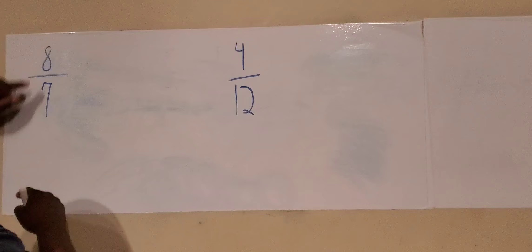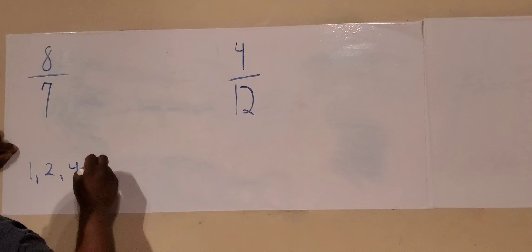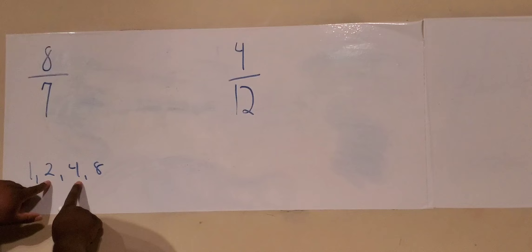Eight sevenths, factors that are divisible. Step one, what goes into eight? We have one, two, four, and eight. Eight times one is eight. Two times four is eight. And likewise, four times two is eight.